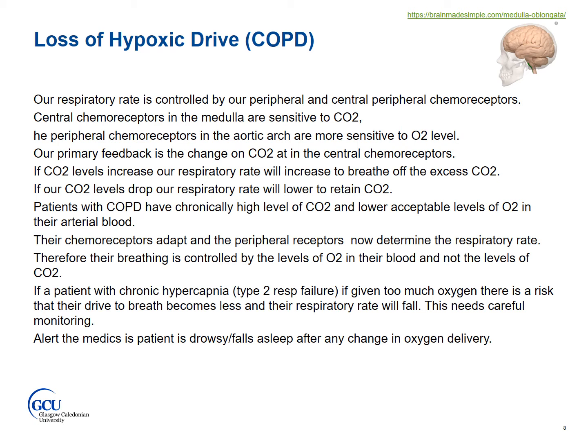Our breathing is monitored by chemoreceptors which monitor the carbon dioxide and oxygen in our blood. There are central chemoreceptors found in the medulla, and peripheral chemoreceptors found in the carotid arteries. The central chemoreceptors are sensitive to carbon dioxide, and the peripheral chemoreceptors are more sensitive to the oxygen level. Our primary feedback for ventilation is the change in carbon dioxide at the central chemoreceptors. If the carbon dioxide levels increase, our respiratory rate will increase to breathe off the excess carbon dioxide. If our carbon dioxide levels drop, our respiratory rate will lower to try and retain carbon dioxide.